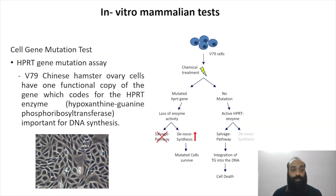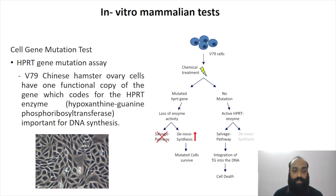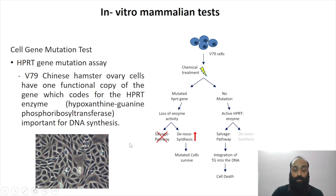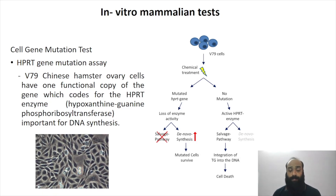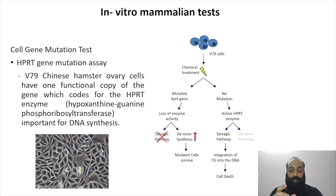The next in vitro test is the HPRT gene mutation assay, which utilizes V79 Chinese hamster ovary cells, abbreviated as CHO. These cells have one functional copy of the gene encoding HPRT — hypoxanthine guanine phosphoribosyltransferase — which is very important for DNA synthesis. If a suspected mutagen is exposed to these cells, it may mutate the only active HPRT gene.